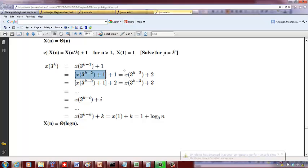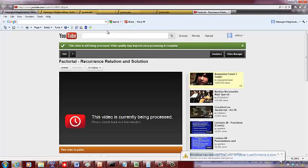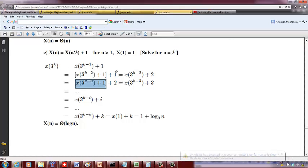I can write X(3^(k-2)) as X(3^(k-3)) + 1. Then this +2, so it becomes X(3^(k-3)) + 3. So you can in general write X(3^k) as X(3^(k-i)) + i.